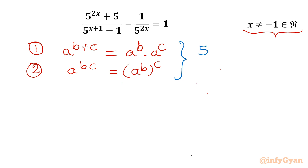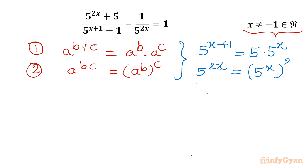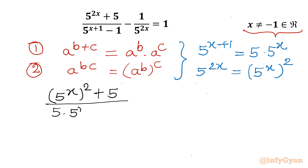So I can write 5 power x plus 1. Using property 1, it will be 5 times 5 power x. And 5 power 2x — using property 2, I can write 5 power x whole square. Applying to our equation: 5 power x whole square, plus 5 over 5 times 5 power x minus 1, minus 1 over 5 power x whole square, equal to 1.